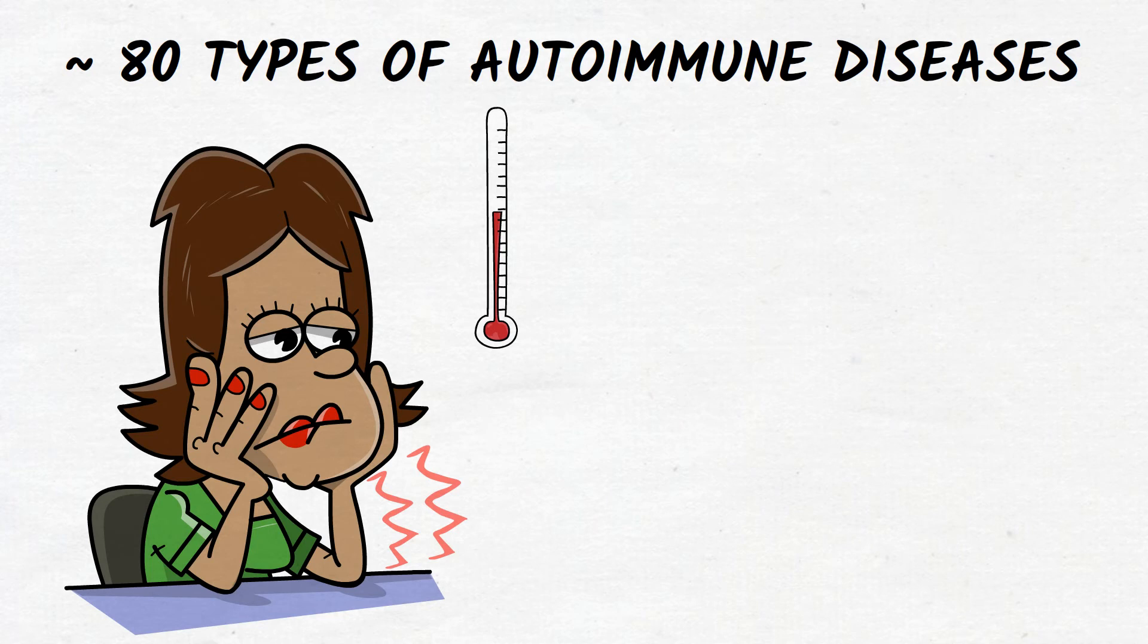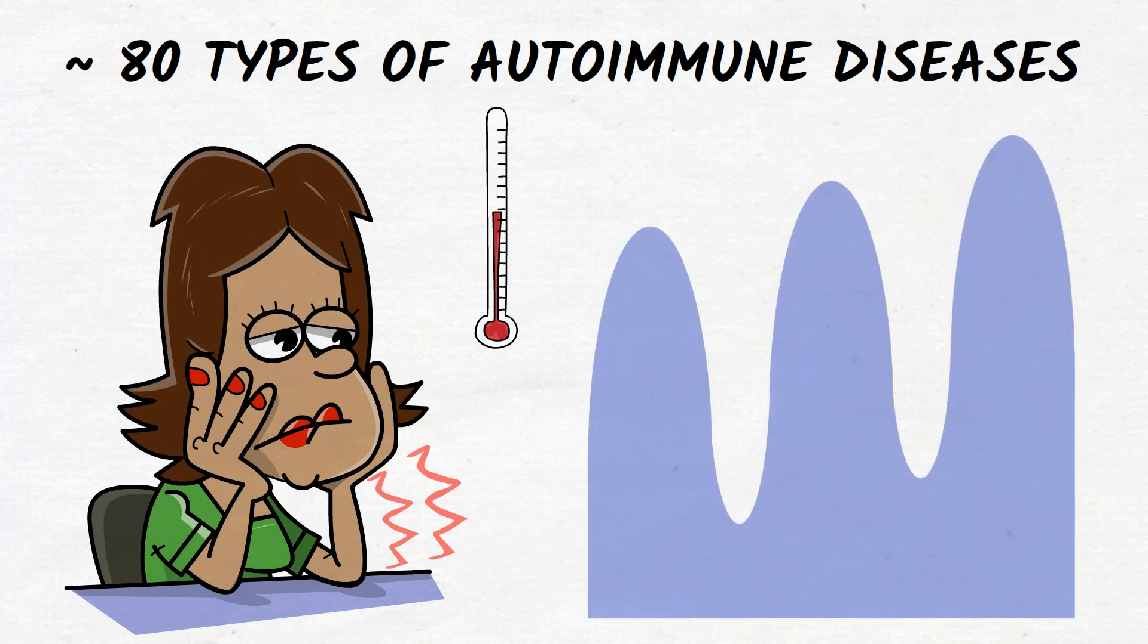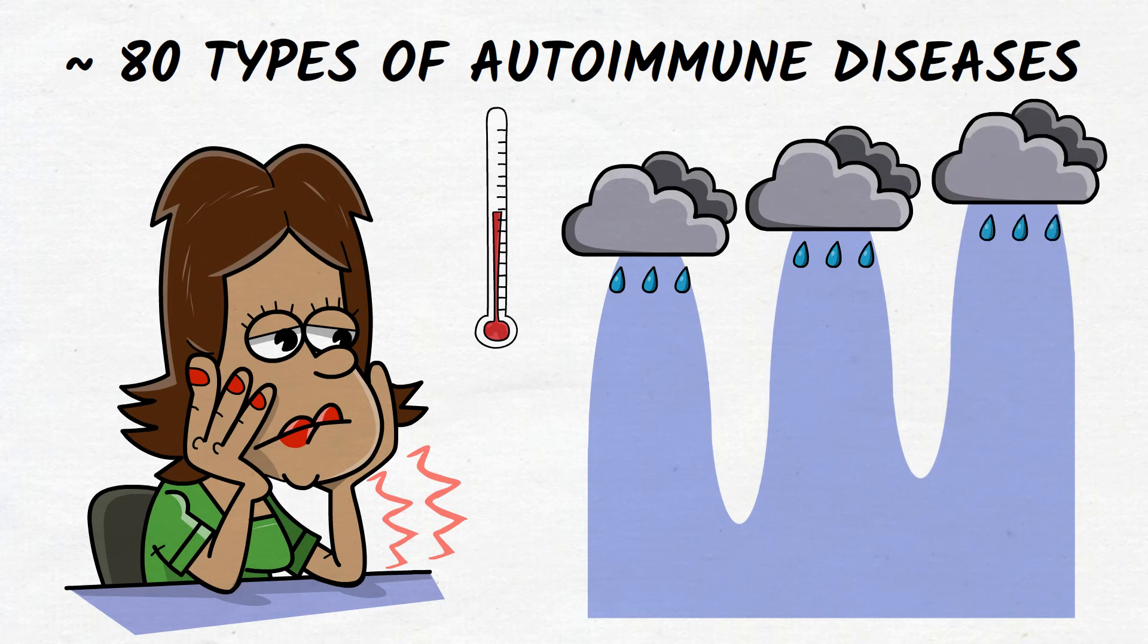Usually, autoimmune diseases evolve with periods of flare-up when symptoms get more severe and periods of remission when symptoms get better or disappear for a period of time.